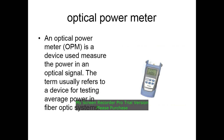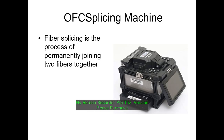An optical power meter (OPM) is a device used to measure the power in an optical signal. The term usually refers to a device for testing average power in fiber optic systems. An OFC splicing machine is used for fiber splicing, which is the process of permanently joining two fibers together.